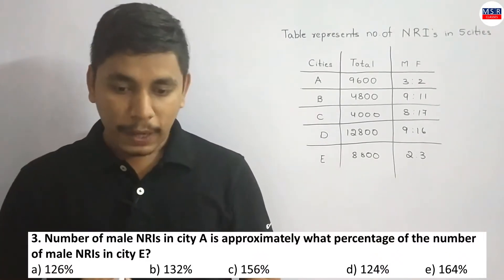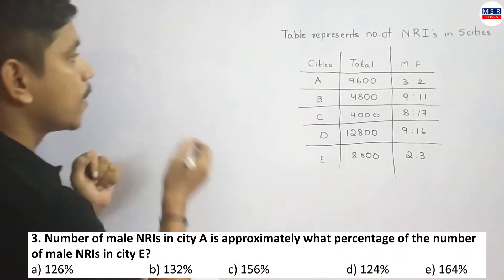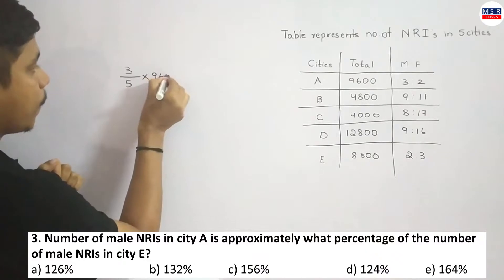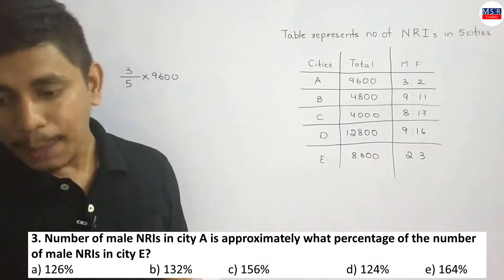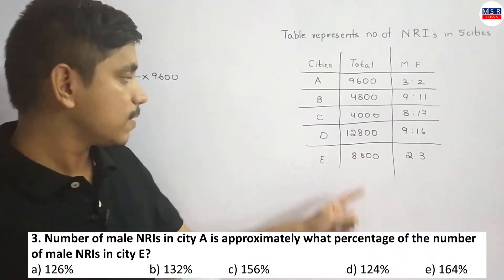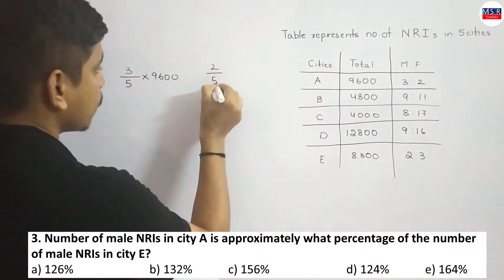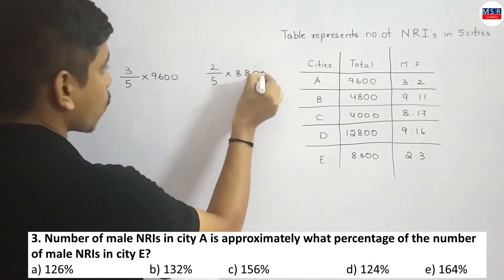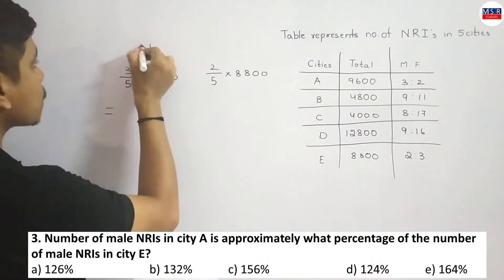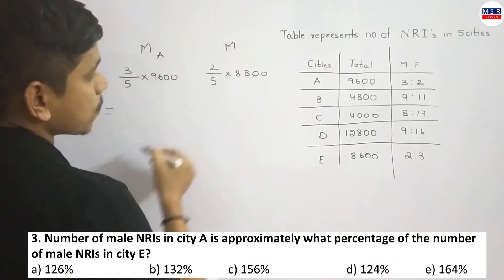Next question: The number of male NRIs in city A is approximately what percent of the number of male NRIs in city E? So we need male NRIs from city A divided by male NRIs from city E, expressed as a percentage.